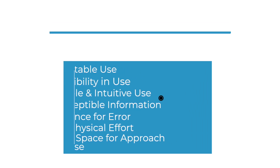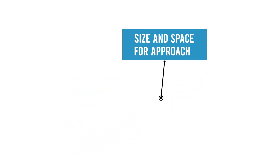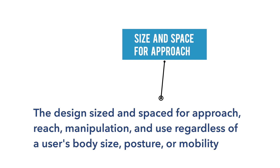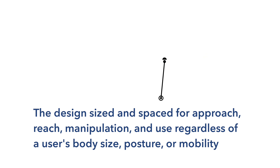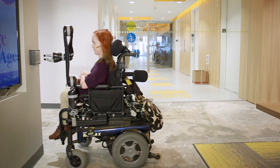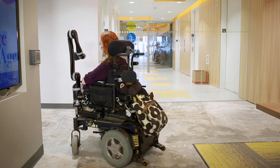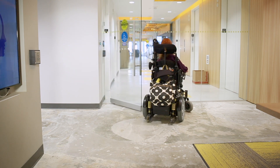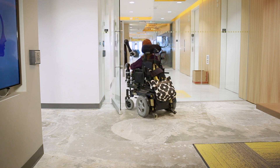The seventh and final universal design principle is size and space for approach and use, meaning the design must be appropriately sized and spaced for approach, reach, manipulation, and use, regardless of a user's body size, posture, or mobility. Good examples of this principle are doorways or turnstiles at least 36 inches wide that can accommodate wheelchairs, rolling luggage, strollers, and shopping carts.